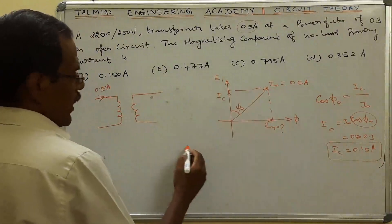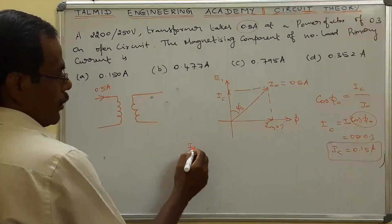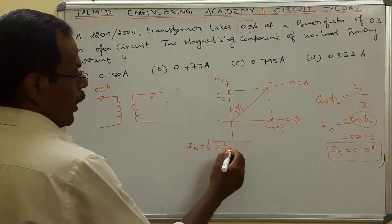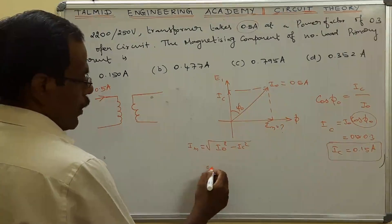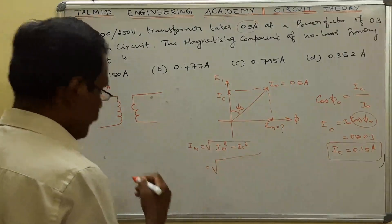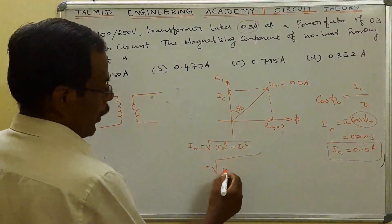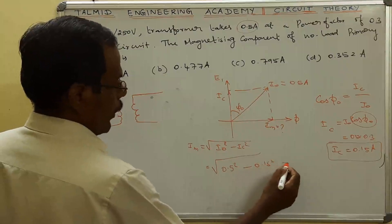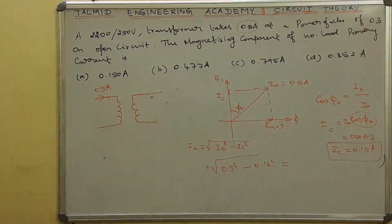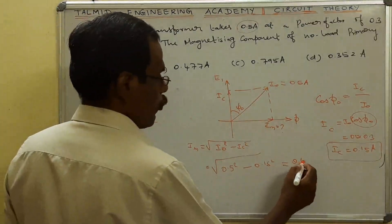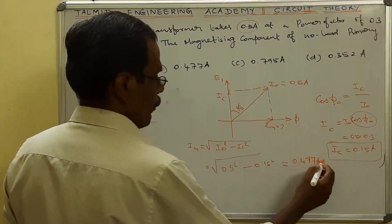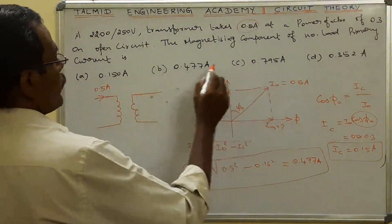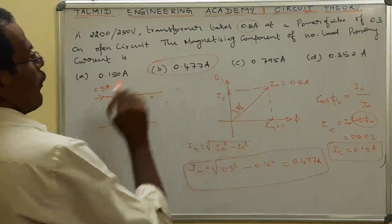Im = sqrt(I0² − Ic²) = sqrt(0.5² − 0.15²) = sqrt(0.25 − 0.0225) = sqrt(0.2275) = 0.477 ampere. So Im — the magnetizing current — equals 0.477 ampere.